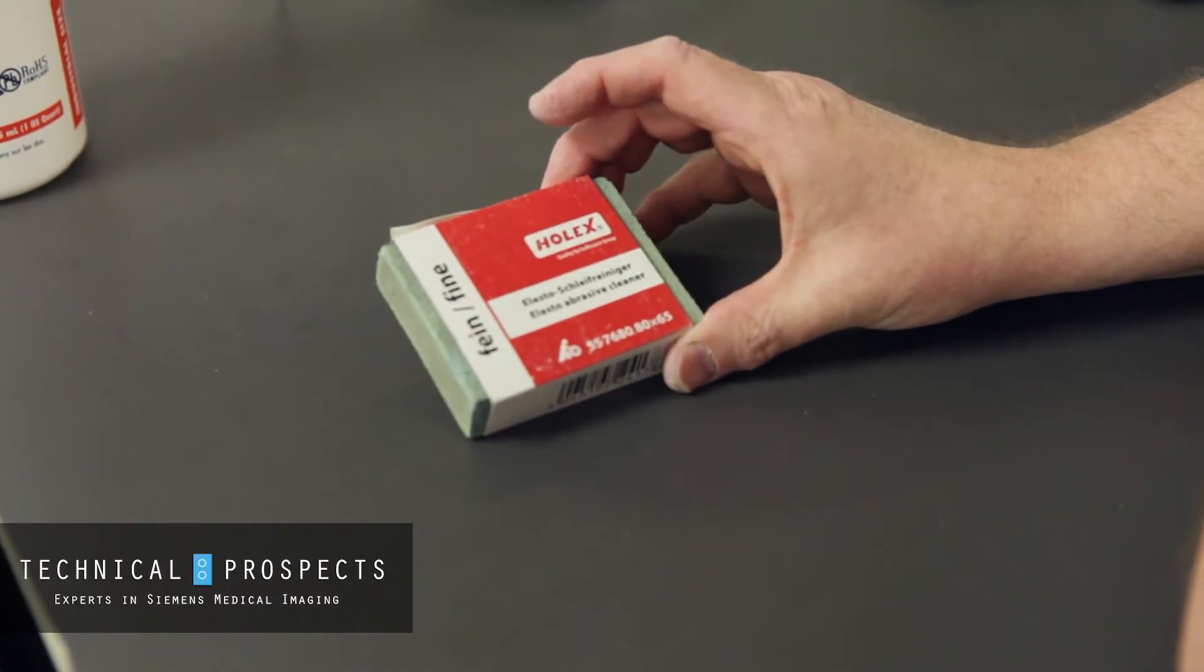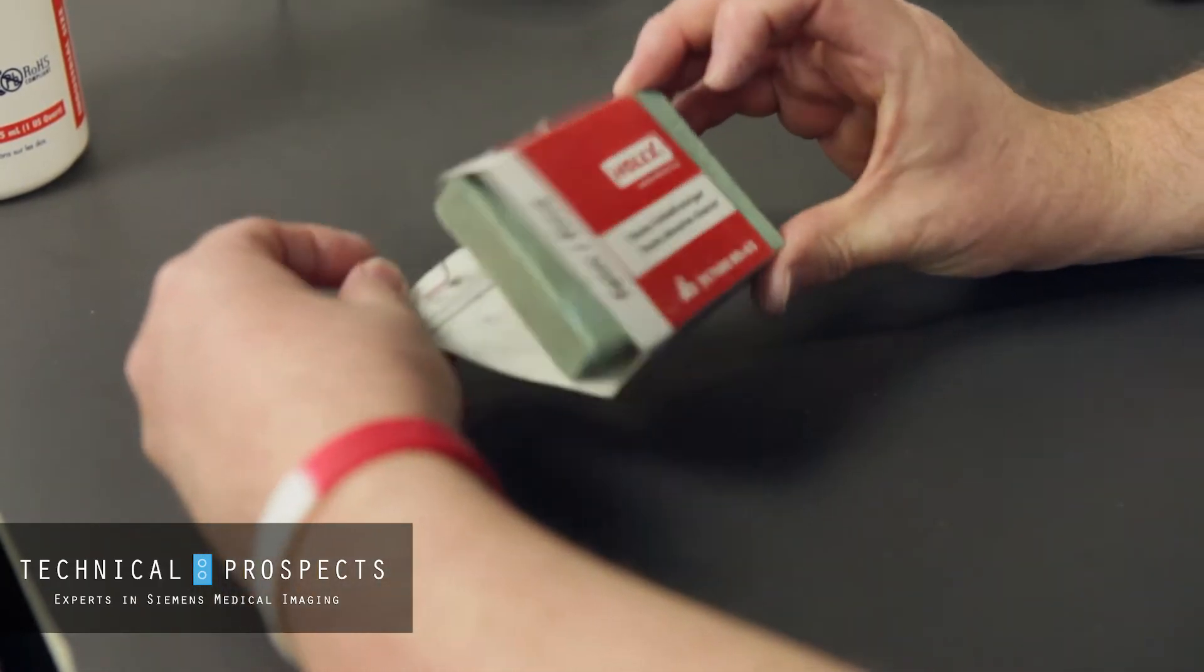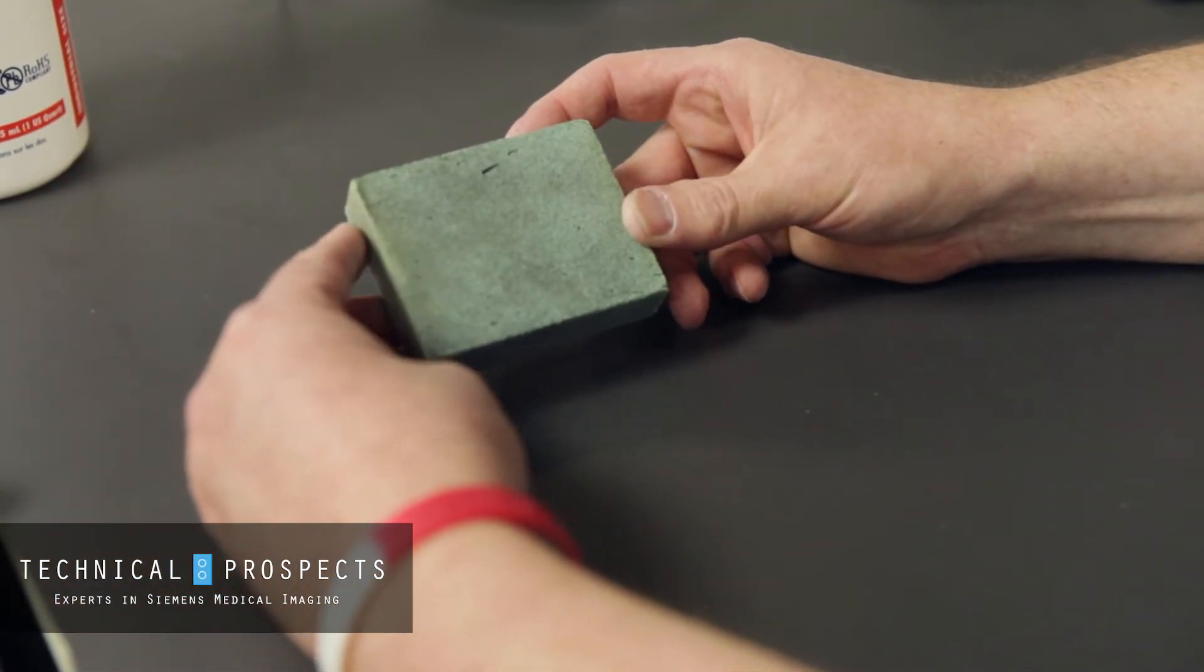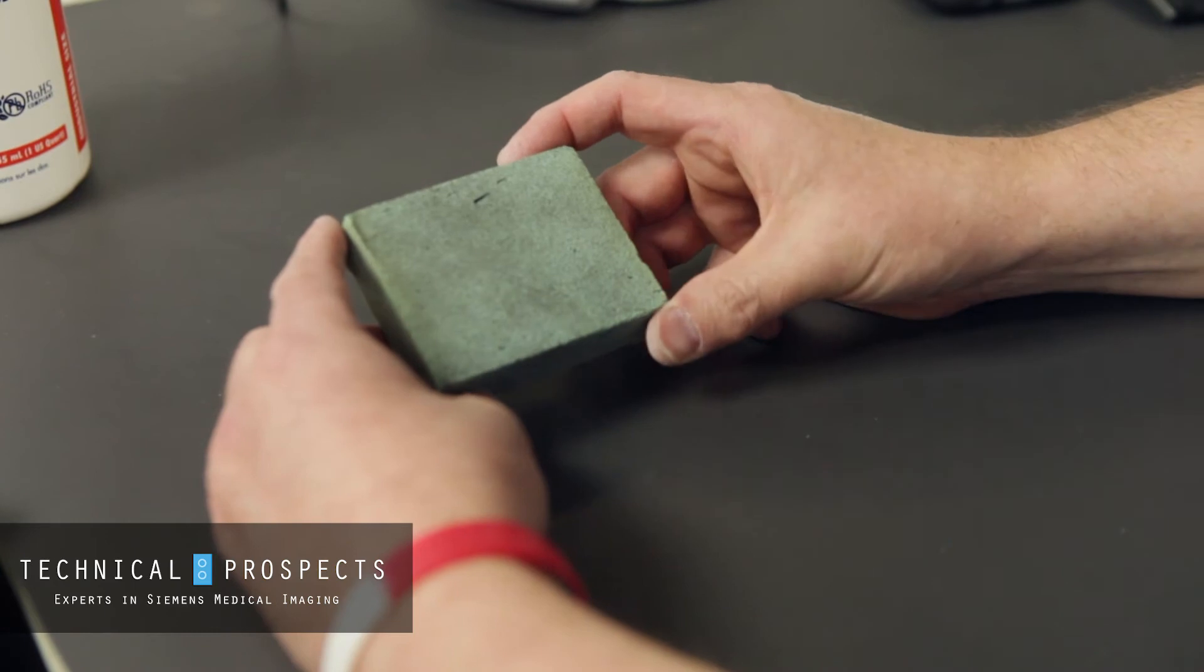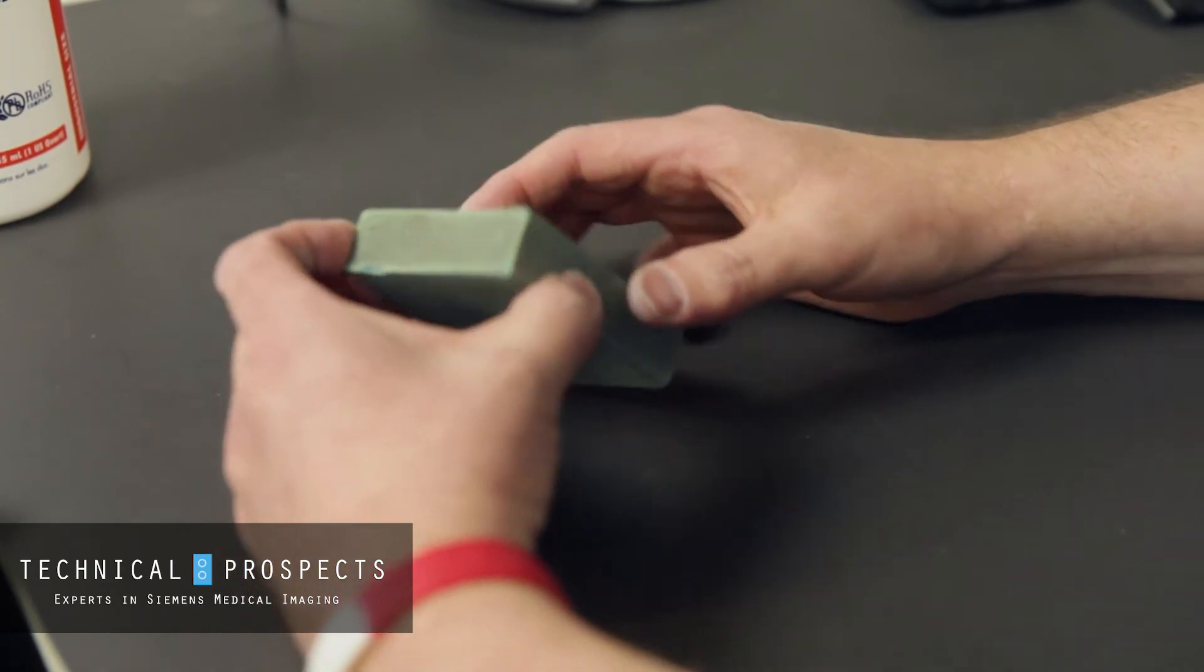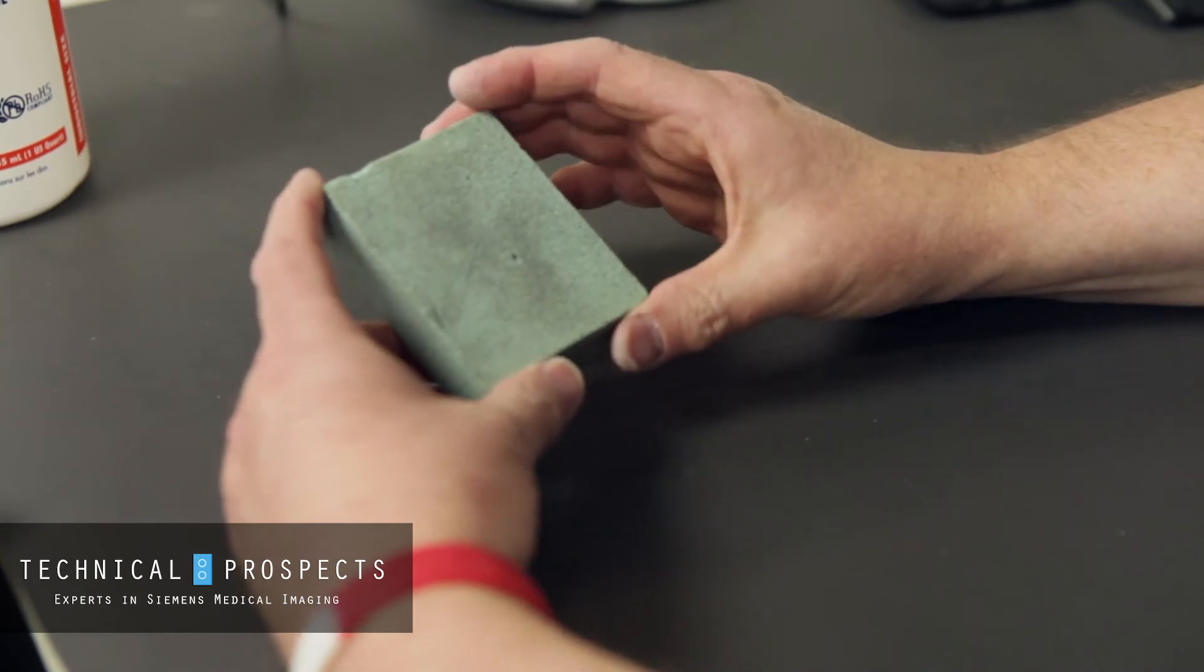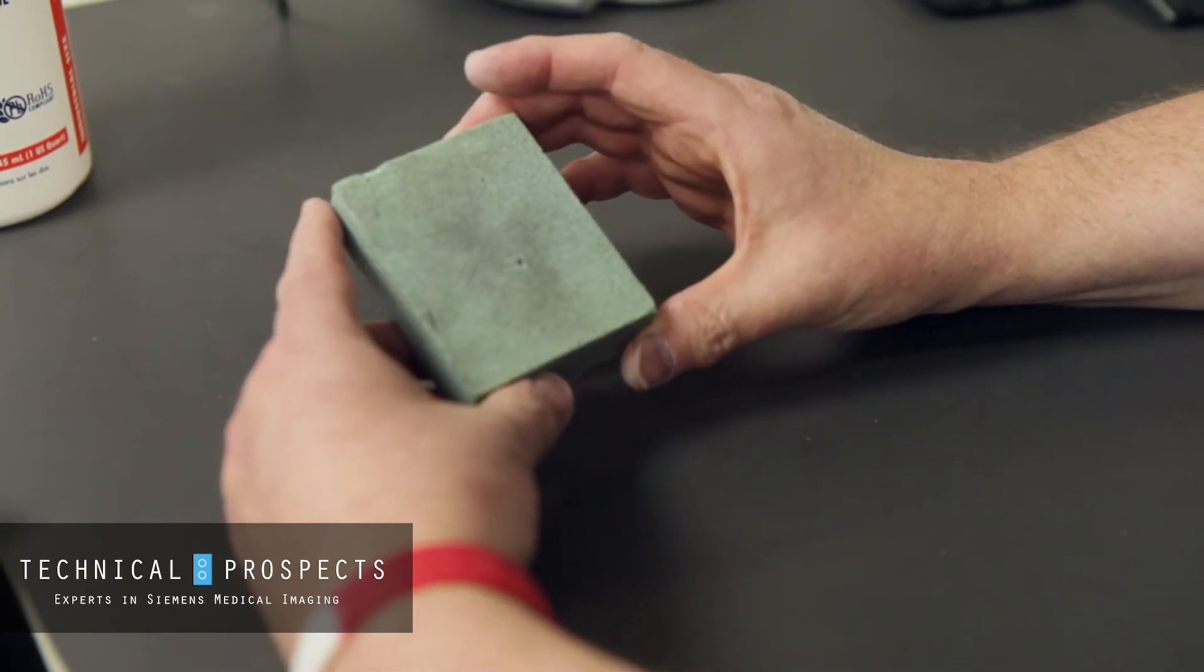Here we have that fine grit rubberized sponge that we can use to polish or remove any burrs on our slip ring. As Kevin Brinkman discussed in the previous video, we use this in a wide sweeping motion, running it over the rails of the slip ring.